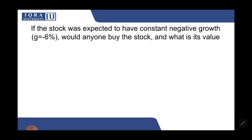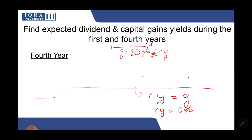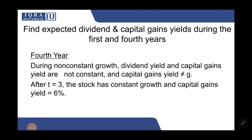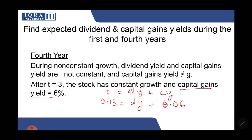For the fourth year, we can verify using R = dividend yield + capital gains yield. R = 13%, and capital gains yield = 6% (since growth is now constant). So dividend yield = 13% − 6% = 7%. When growth becomes constant forever, capital gains yield equals the growth rate, and you can calculate dividend yield this way.